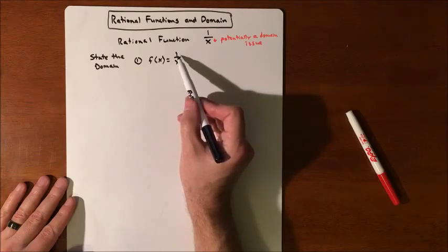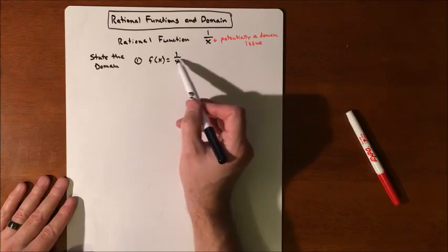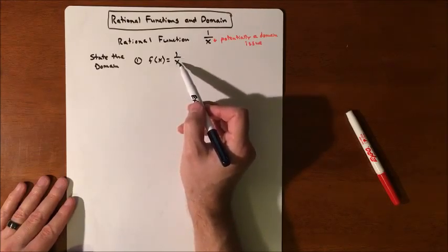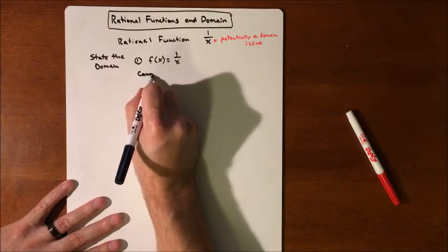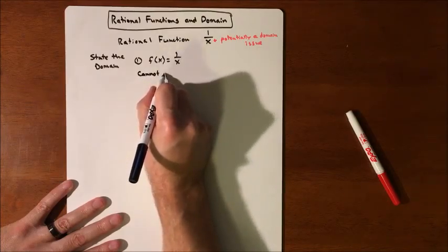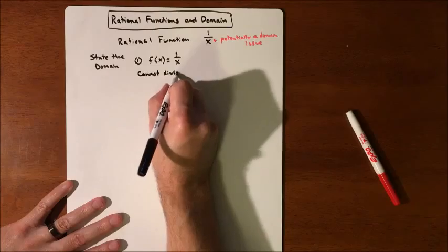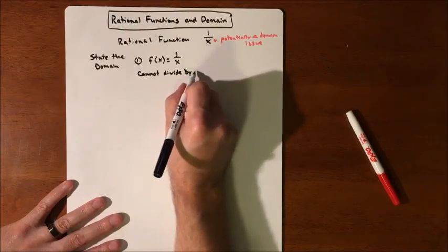So basically we're looking at a one divided by something. Is there anything that we can't divide by? And yes, there's always something that you can't divide by, and you cannot divide by zero. So that is going to be our issue. You cannot divide by zero.